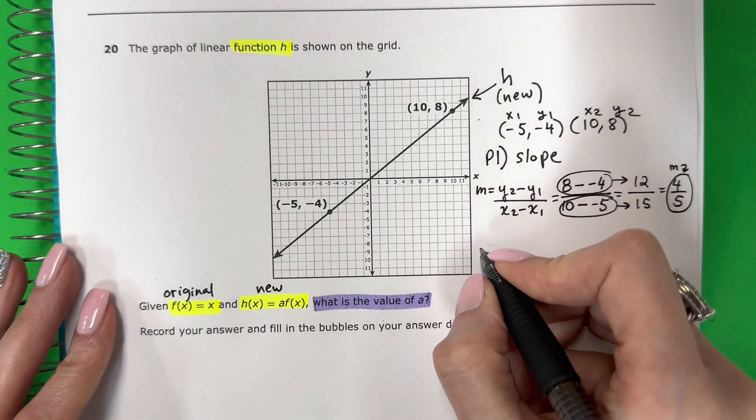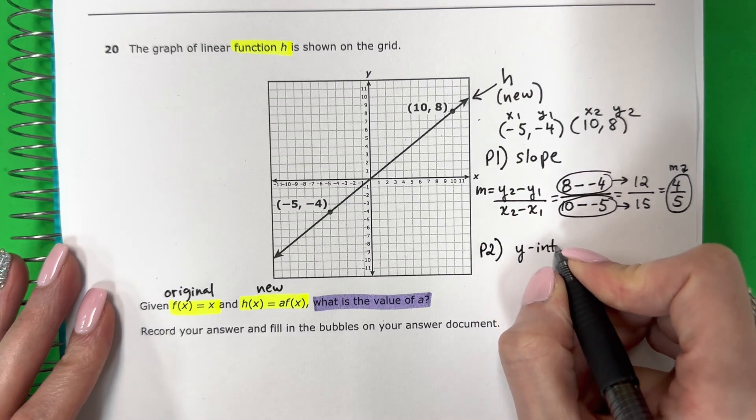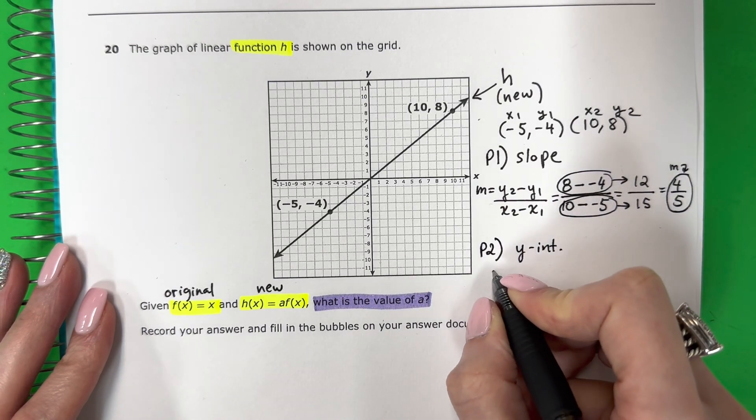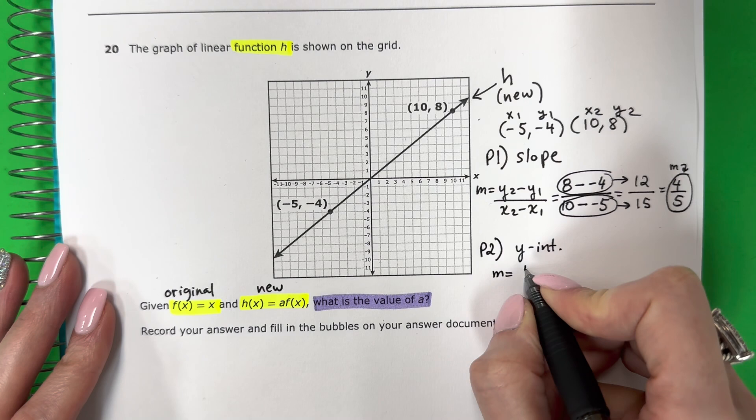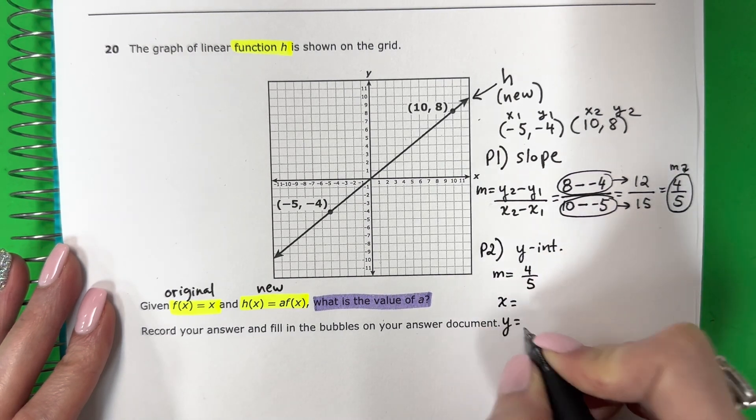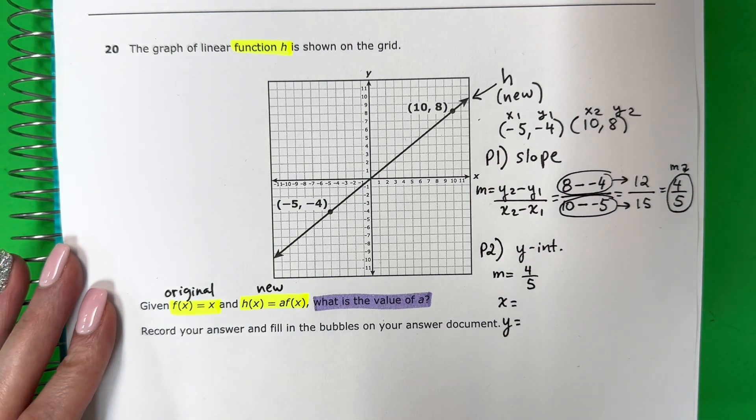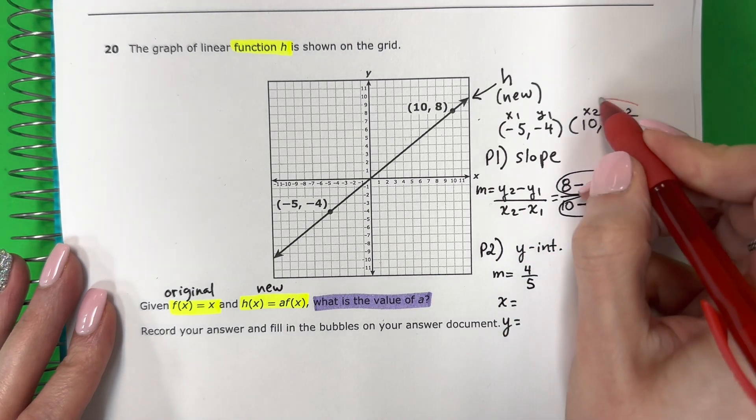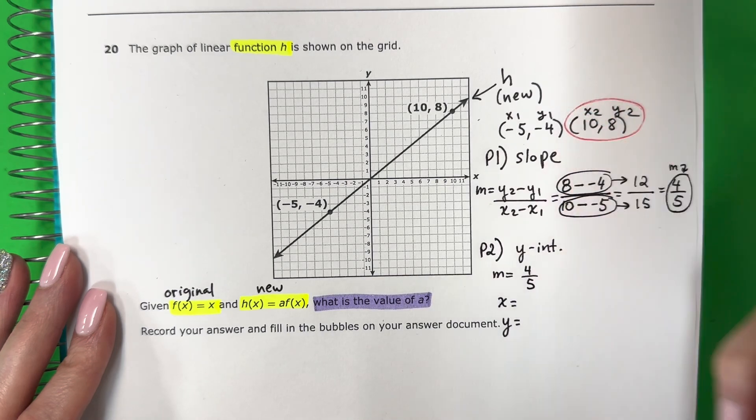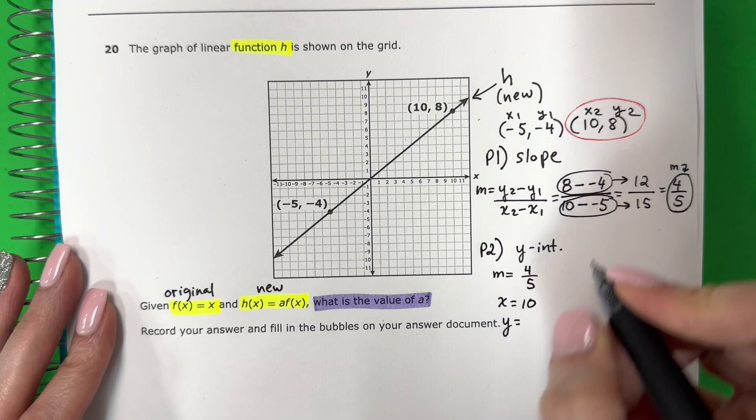Now, I need to do part 2. I want to find the y-intercept, which is b, right? So you're going to make your list. m equals 4 fifths. X, y. Alright, you're going to need one point. Necesito un punto. It doesn't matter which one. No importa cuál. I'm going to pick the positives. Yo quiero los positivos. So x will be 10. Y will be 8.